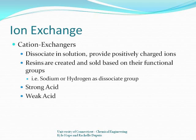Ion exchange resins can be classified into two general categories: cation and anion exchangers. Cation exchangers dissociate in solution and provide positively charged ions, which can be swapped for unwanted ions in another solution. Ion exchange resins are created and sold according to their functional group — for instance, there are resins that give sodium ions, used in most water softeners to replace hardness ions, and resins which give hydrogen ions, used to make exceptionally pure water. Cation exchange resins can be further classified as strong acid or weak acid because they mimic the behavior of those substances.